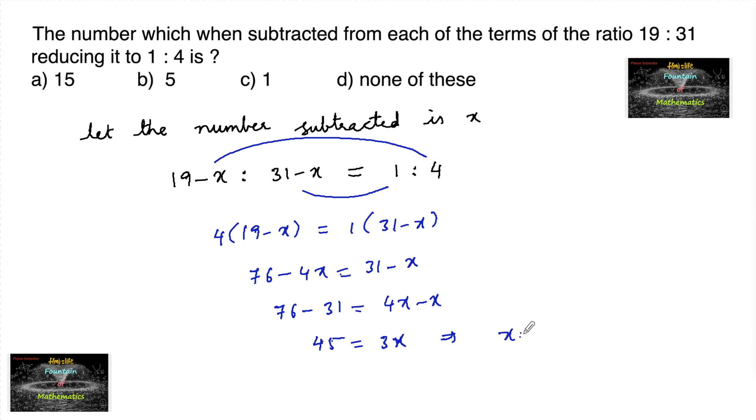So x equals 45 upon 3 which is equal to 15. So 15 is the answer, first option.